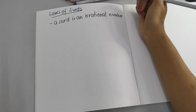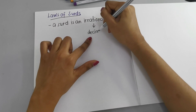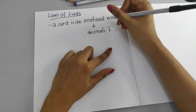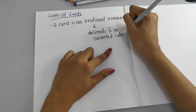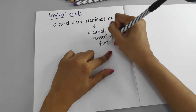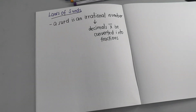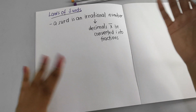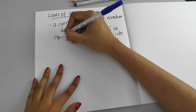Irrational numbers are decimals that cannot be converted into fractions. So if you have a decimal and you cannot convert it into a fraction — say you try in a calculator and you still don't get a fraction — that means it's an irrational number. A rational number means you can convert the decimal to a fraction. A surd will always be in square root form.